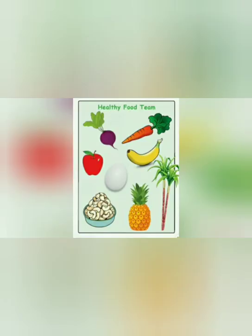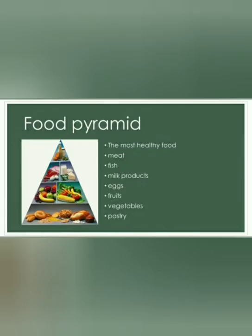We need to include not only vegetables and fruits but also nuts, eggs, and milk — all kinds of food in a daily diet. This is the food pyramid: the picture shows us how food should be taken in proper proportion daily. The food pyramid includes pastry, vegetables, fruits, eggs, milk products, fish, and meat.